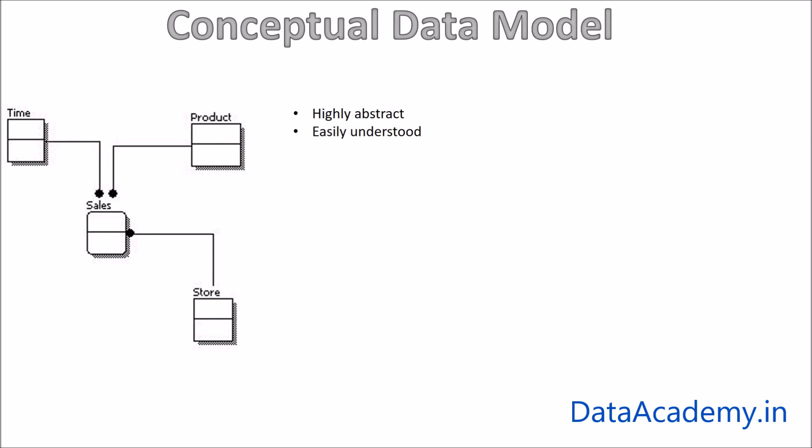So what are some of the attributes of a conceptual data model? First, it is highly abstract. When we say abstract, we refer to the fact that we do not have too much detail. It is at a very high level, hence we call it highly abstract.